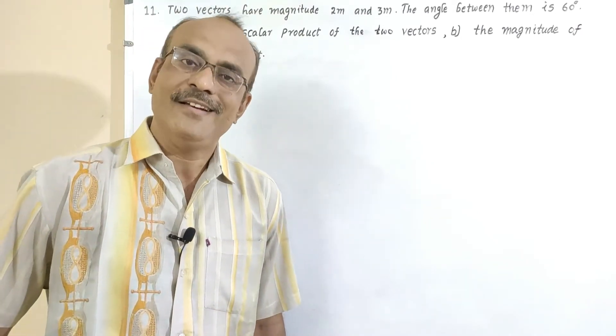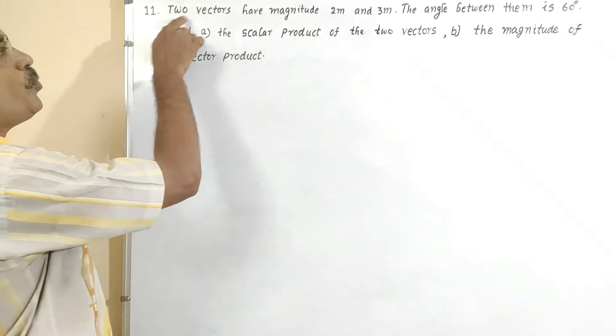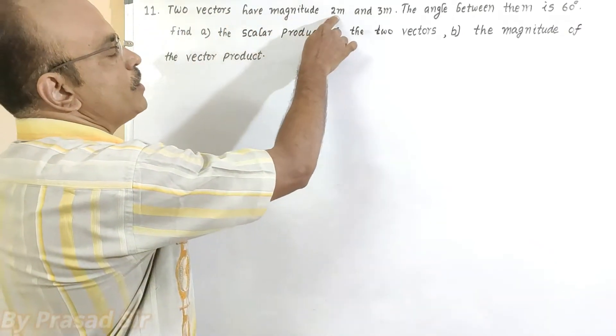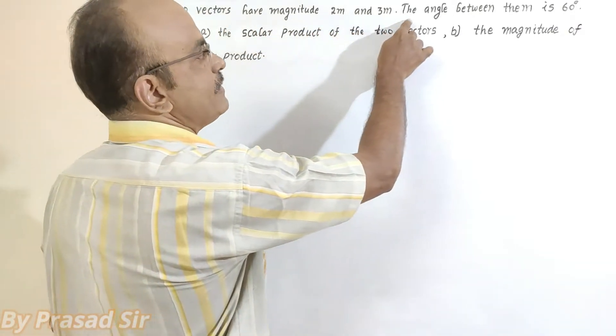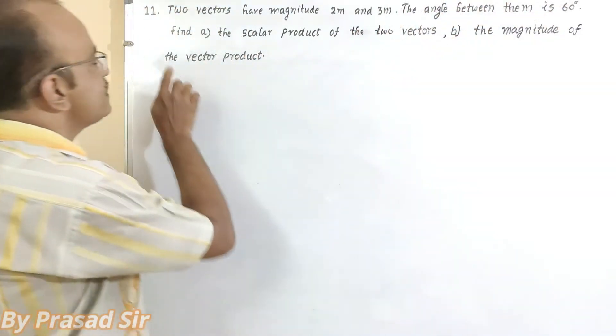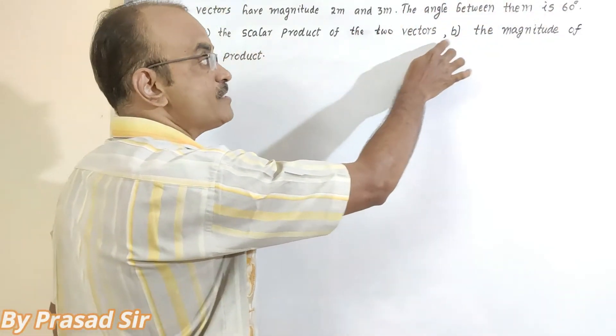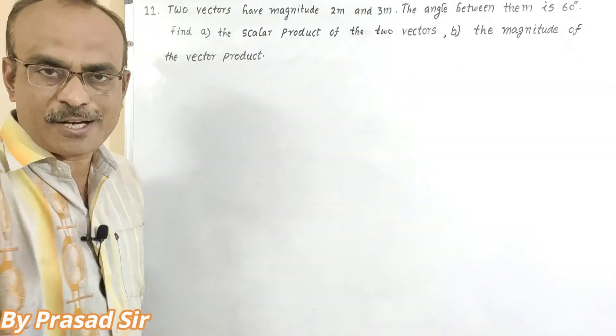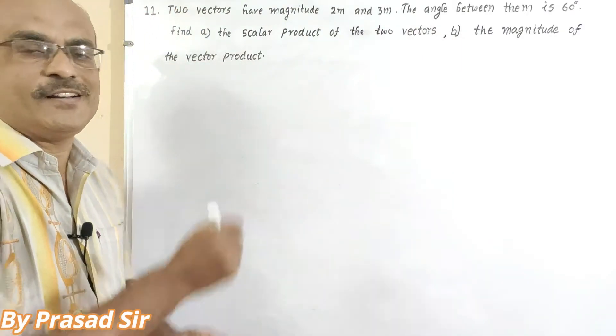Now question number 11. Two vectors have magnitudes 2 meter and 3 meter. The angle between them is 60 degrees. Find A, the scalar product of the two vectors, B, the magnitude of the vector product.